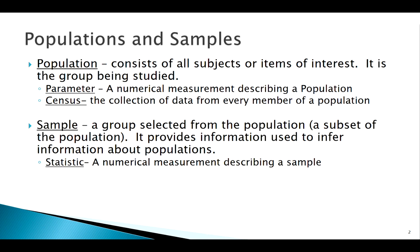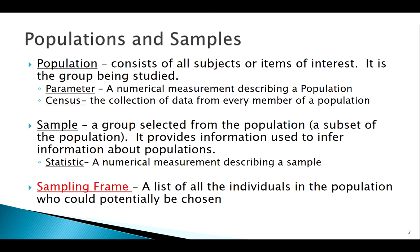The key is we've got to get a good sample — what we call a representative sample or an unbiased sample. A new definition we want to introduce: the sampling frame, which is hopefully everyone in the population who we could choose.